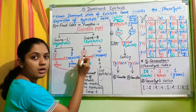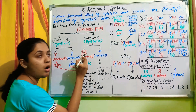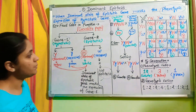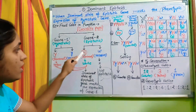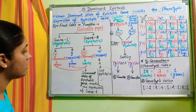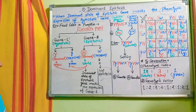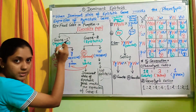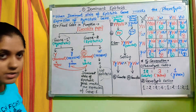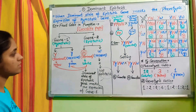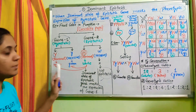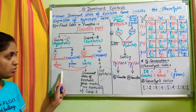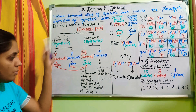Only the dominant allele W of the epistatic gene does the work of suppression. This dominant allele W suppresses the complete gene one — meaning both the dominant allele and the recessive allele of gene one are suppressed. That is why the process is known as dominant epistasis.